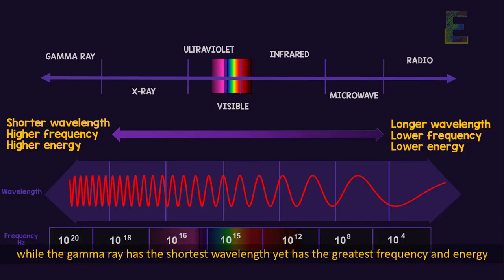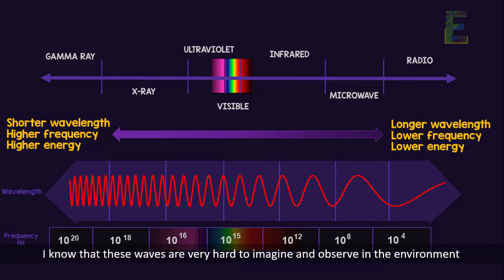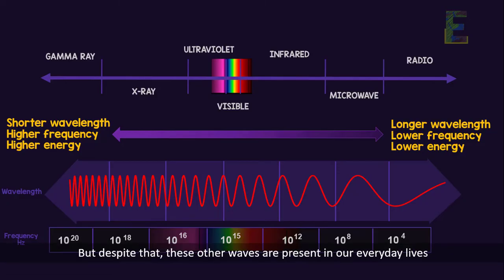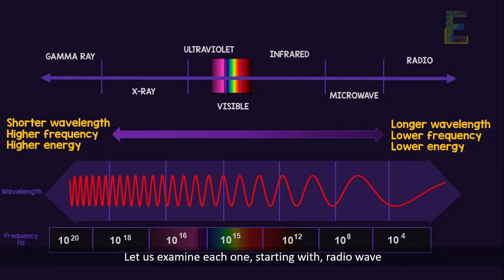I know that these waves are very hard to imagine and observe in the environment because it is a fact that only visible lights are the electromagnetic waves that we could see through our naked eye. But despite that, these other waves are present in our everyday lives. Let us examine each one starting with radio waves.